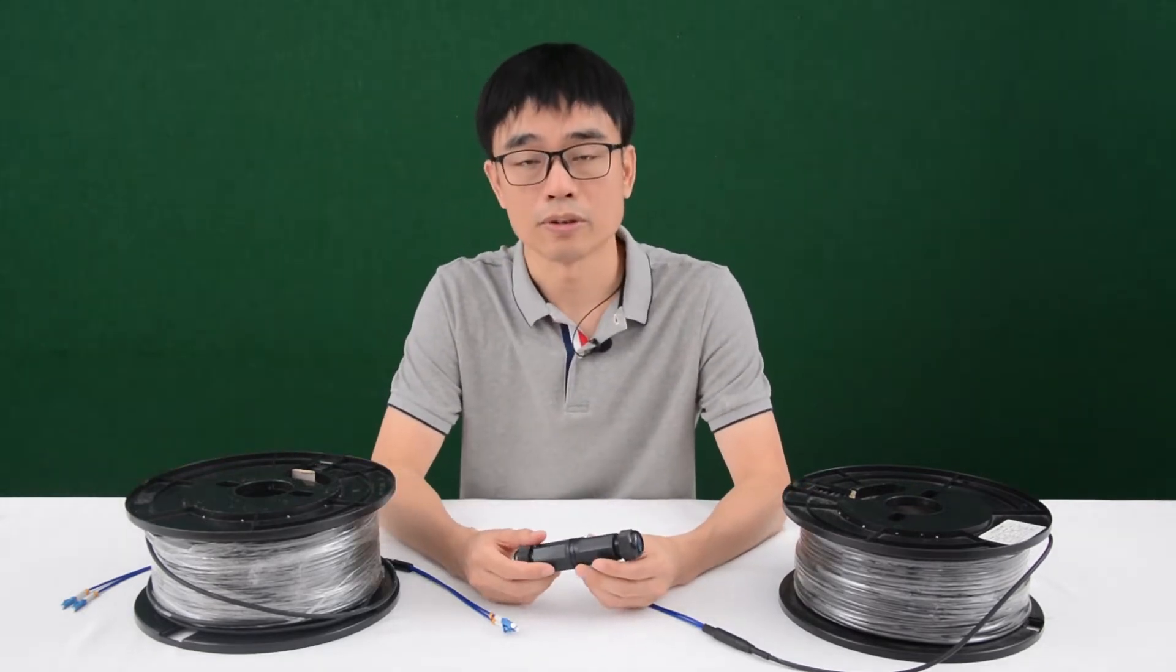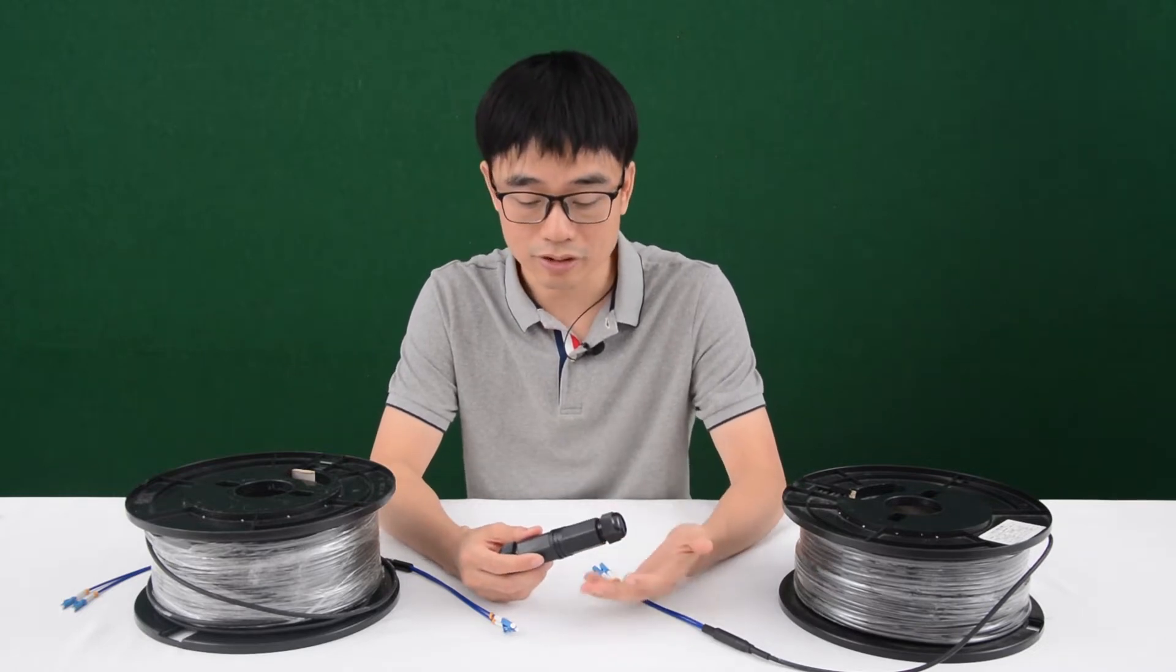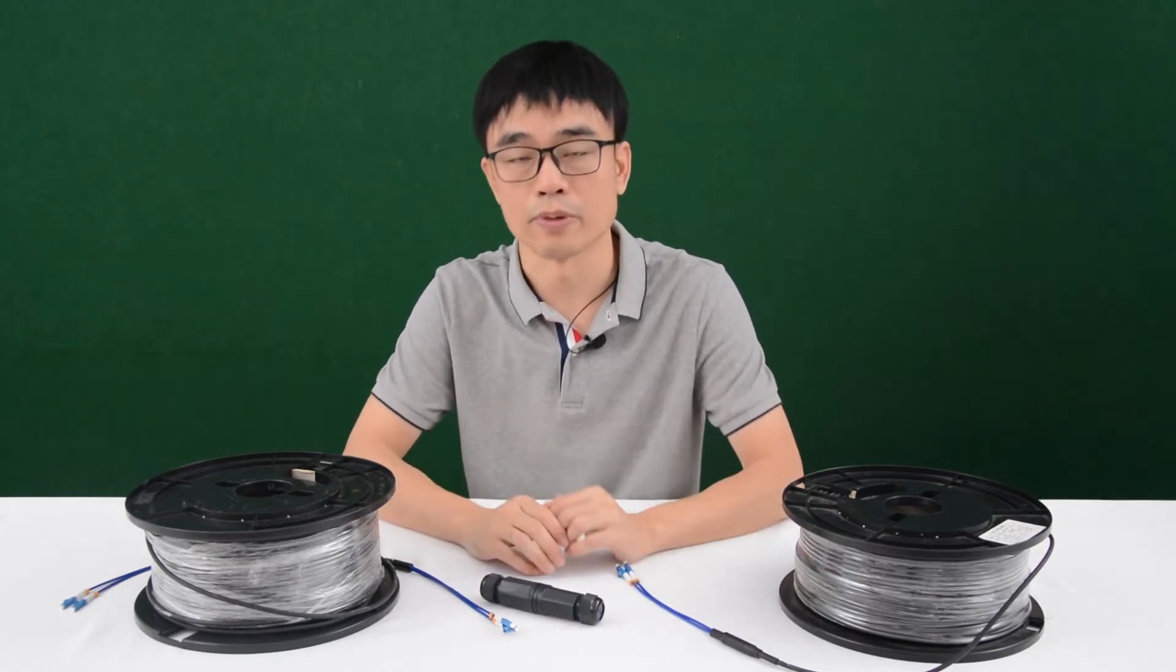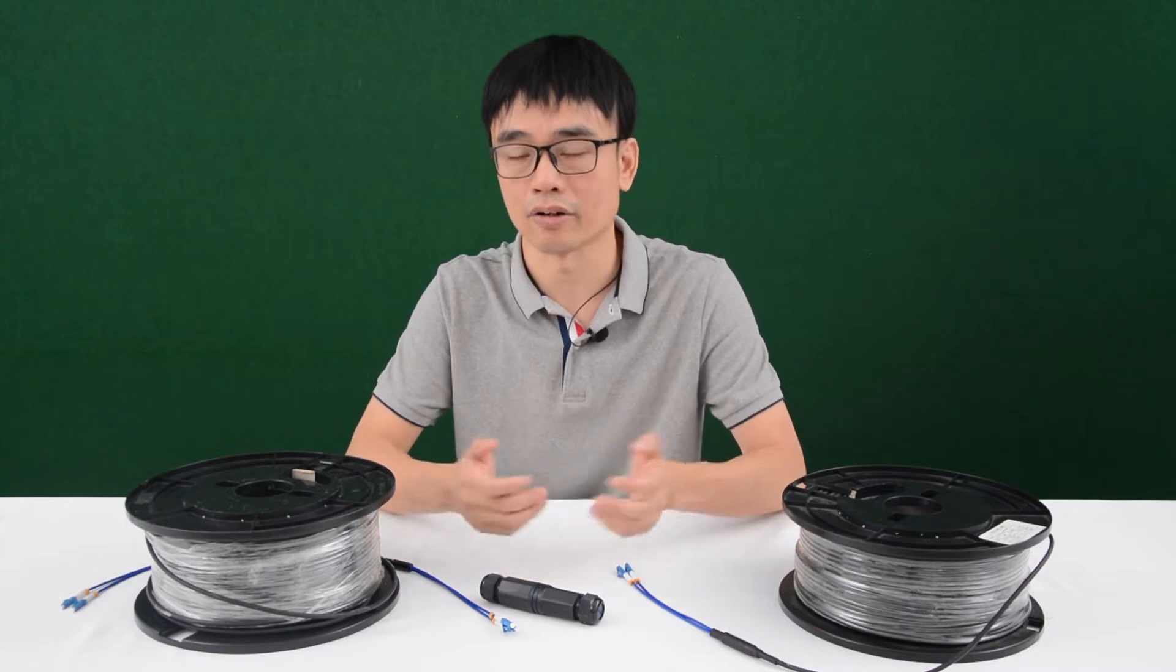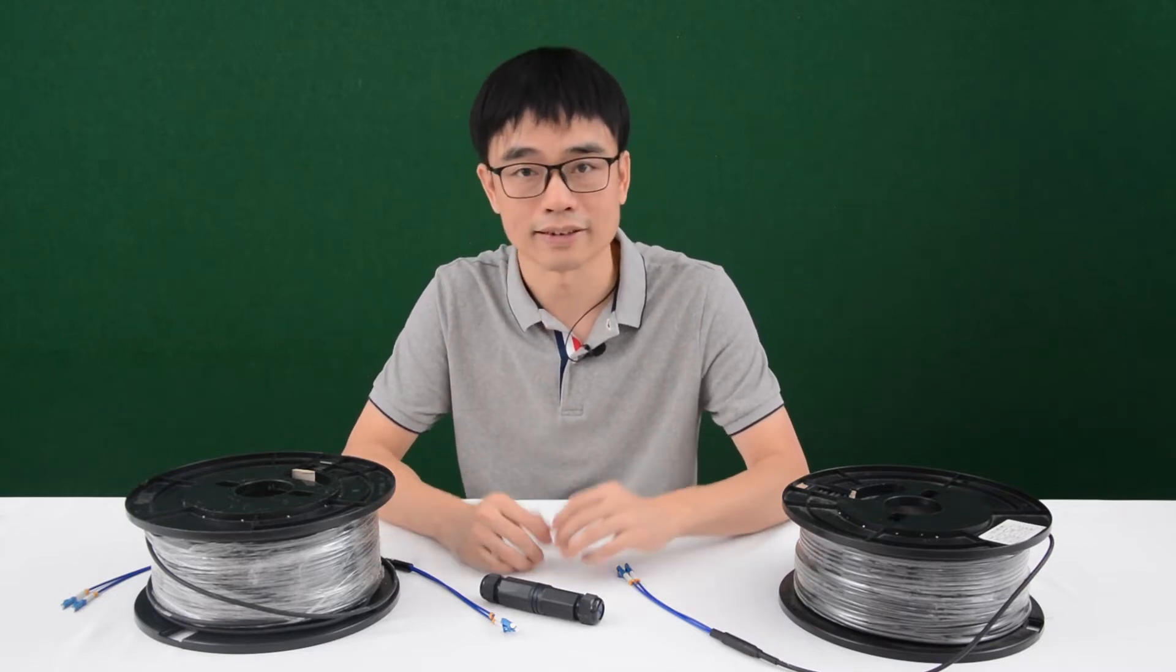Here we got the LC waterproof coupler. By using this coupler, we can join these two pre-made fiber optic cables together to get longer length. Okay, now let's get started.